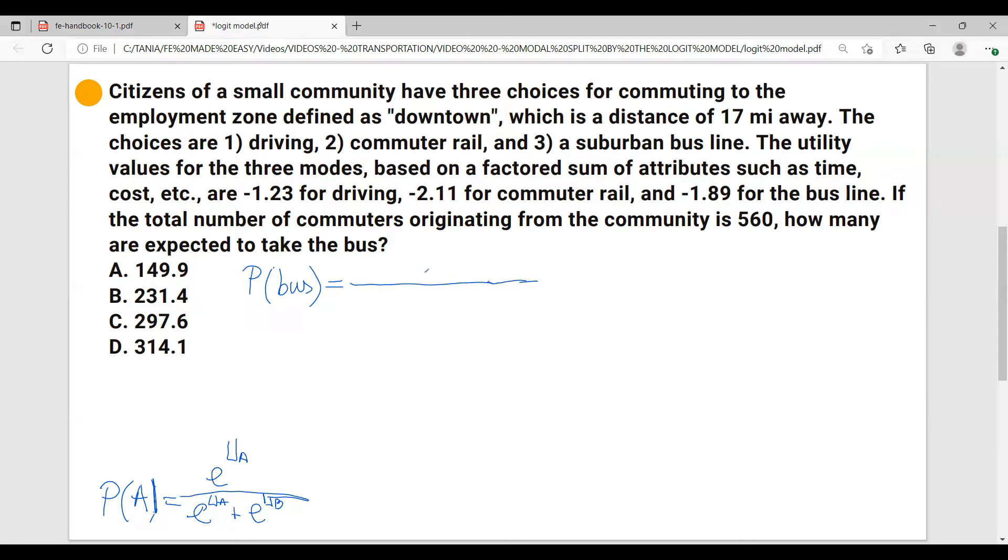So let's apply this to our case, which means that if we have to calculate how many are taking the bus, we'll have E, to the coefficient for the bus, E again, this goes the bus plus E for the rail plus E for driving.